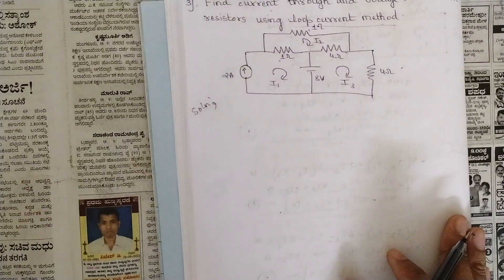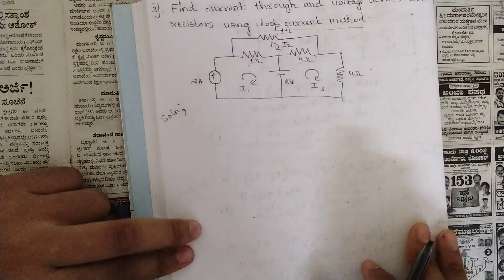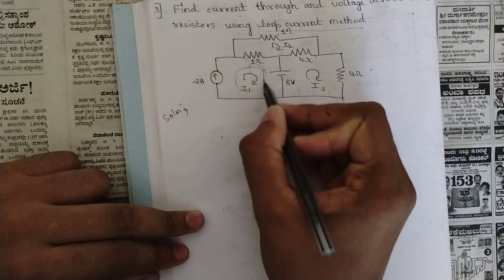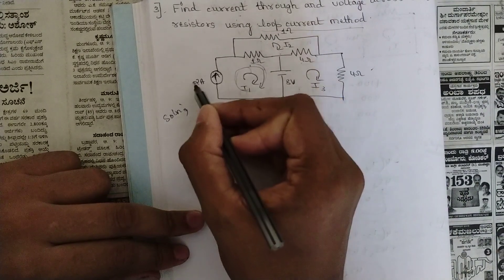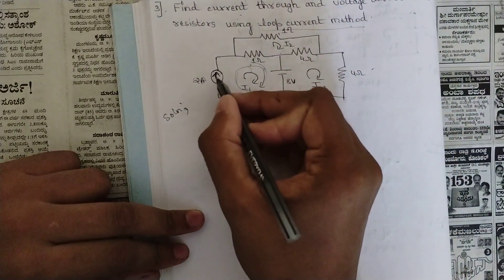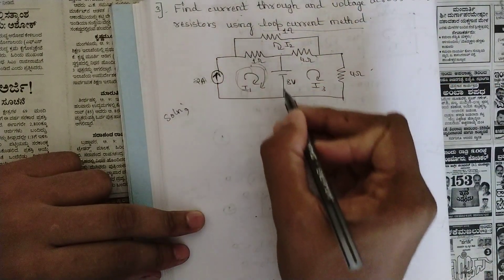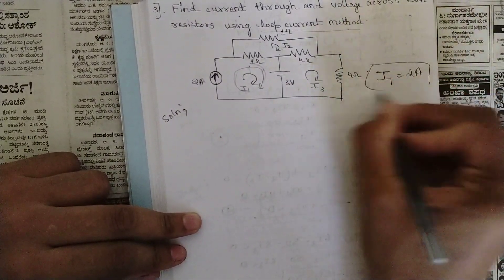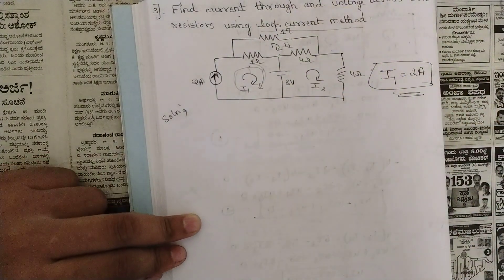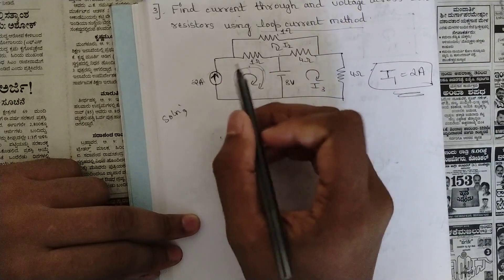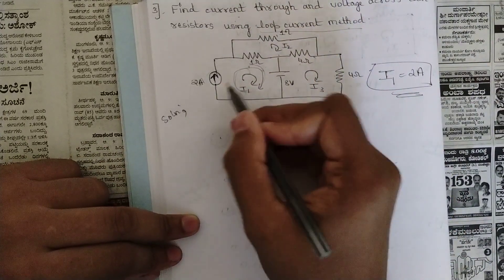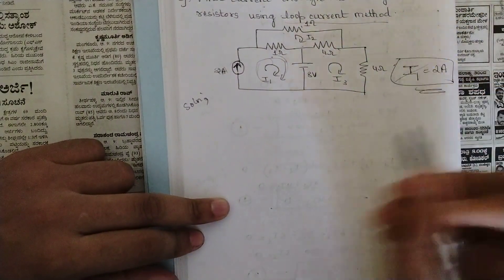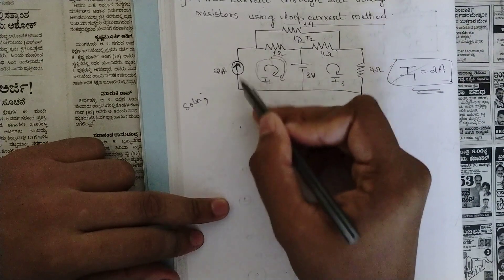In the first loop i1, there is already a current source of 2 amperes. Using common sense, the current traveling in this full loop equals that source value, so we can directly write i1 = 2 ampere. Whenever a current source is present in a loop, don't write a loop equation — just assign it directly.